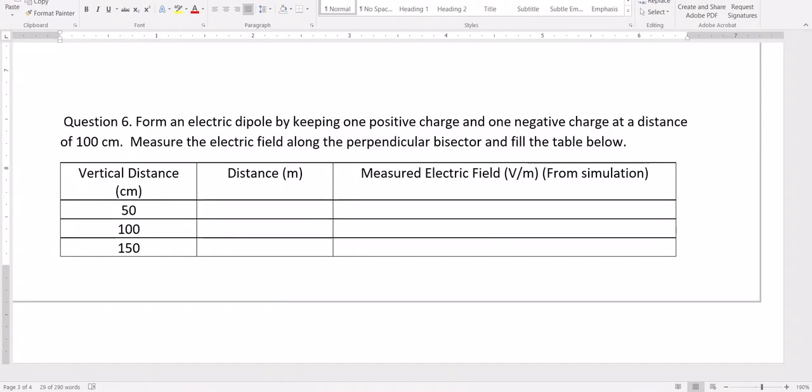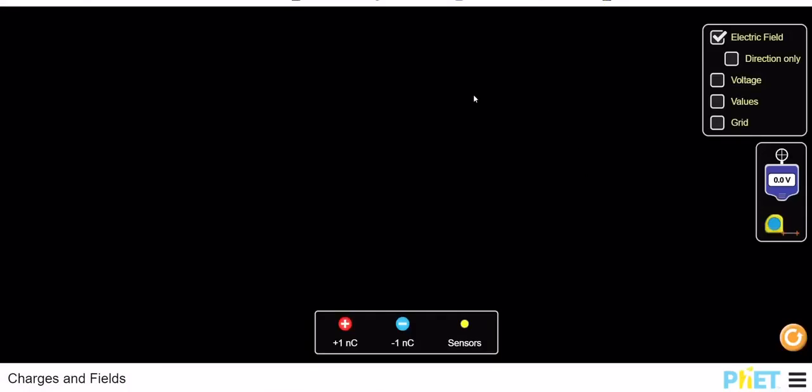First, you have to open the PhET simulation. Once you have the PhET simulation, this is how it looks like. Go to the values and grid.